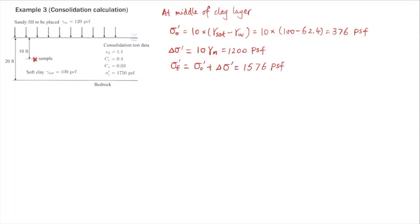Comparing σ₀', σf', and the pre-consolidation pressure σc': we notice that σ₀' is smaller than σf', and it's also smaller than the pre-consolidation pressure. This means when we load this clay, it stays on the recompression portion of the curve the entire time — the final effective stress is still smaller than the pre-consolidation pressure. This is Case 3, where the clay stays on the recompression curve.